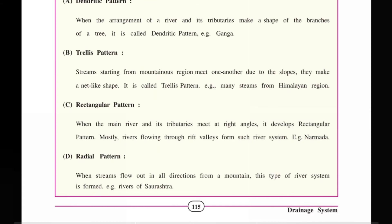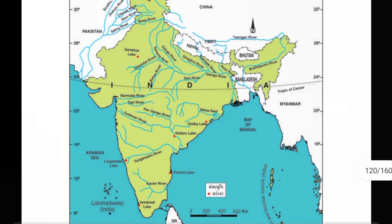In the mountain region, the next pattern is the rectangular pattern. When the main river and its tributary meet at a right angle, it forms a rectangular pattern. This is mostly seen in rivers flowing from rift valleys, such as the Narmada. The radial pattern occurs when streams flow out in all directions from a mountain, forming a circular pattern. This radial pattern can generally be seen in south Indian rivers.